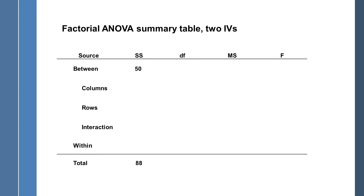Now we have the between sum of squares (50) and the total sum of squares (88). We put those in our summary table and use the shortcut for within: 88 minus 50 gives us the within sum of squares of 38. Then we move on to degrees of freedom: df-between is k minus 1, where k is the number of groups. For this experiment, k equals 4 and N equals 20, so df-between is 3, df-within is 16, and df-total is 19.